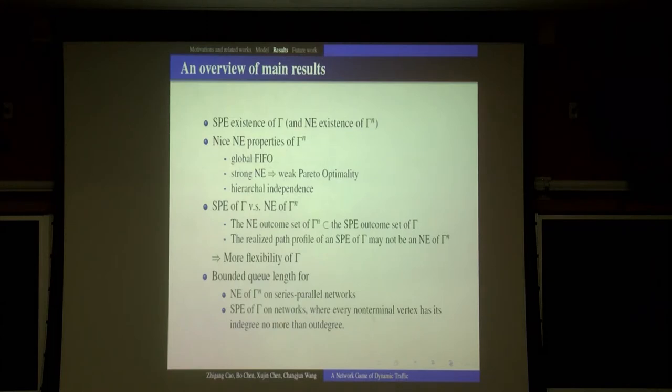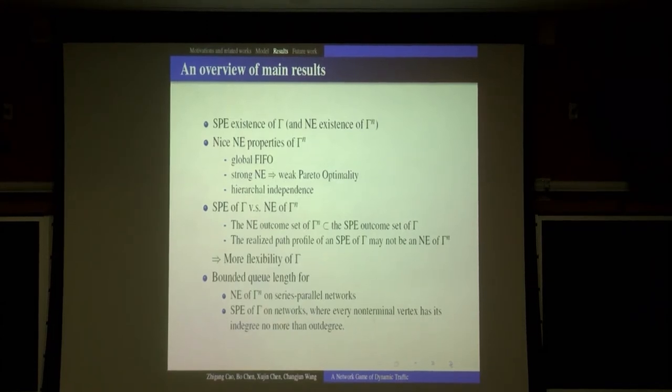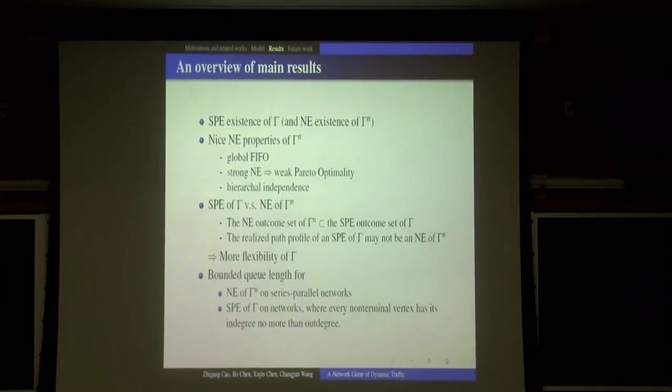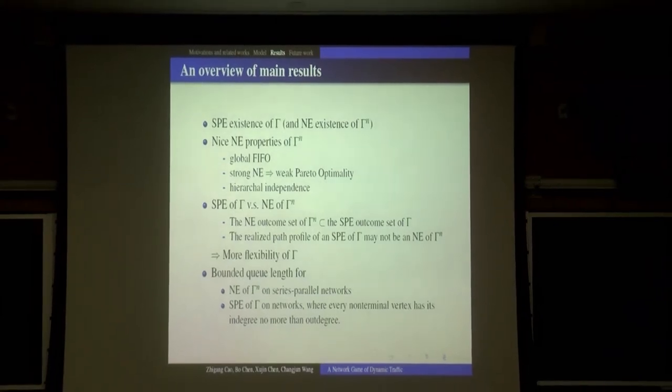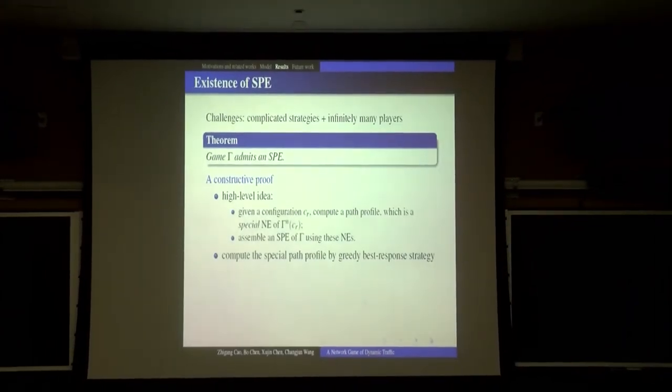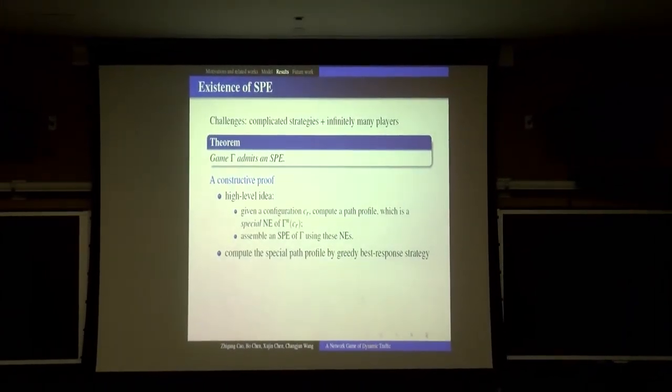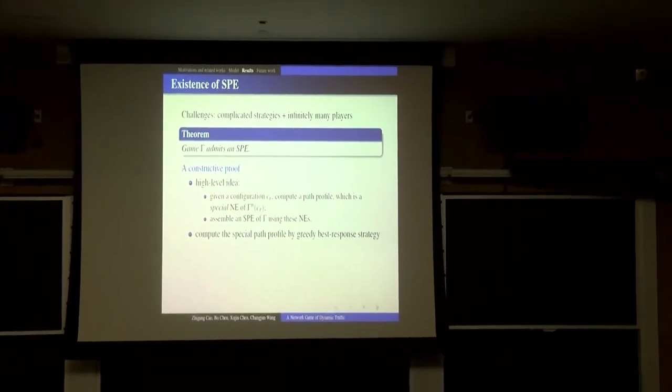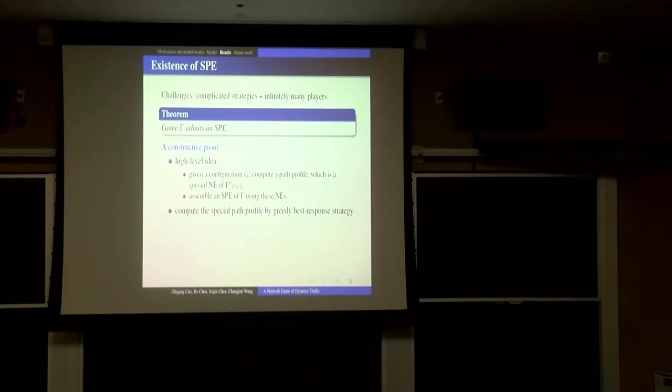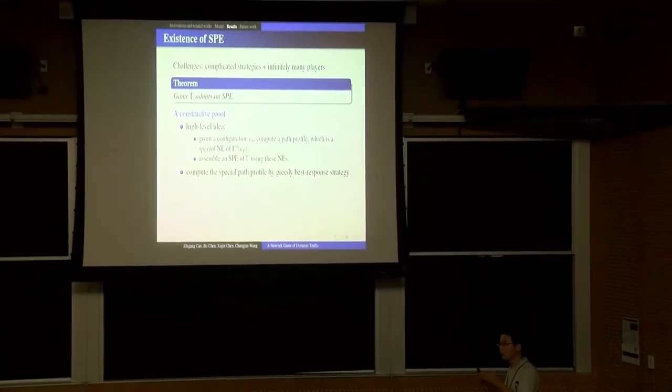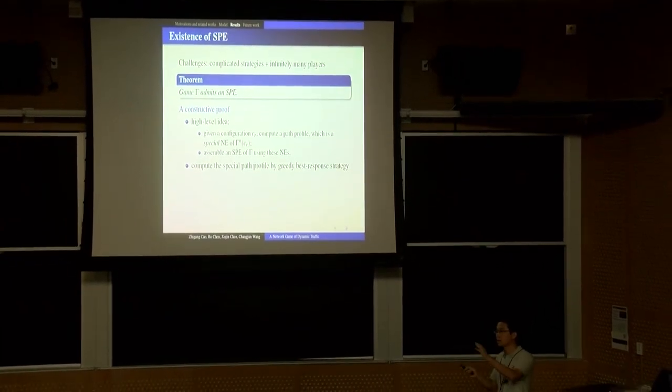Let's have an overview of our main results. First we prove the SPE existence of game Gamma. To the best of our knowledge, this is the first such result, an SPE existence result about this kind of model. The main challenge here is that the strategies can be very complicated, and there may be infinite number of players. They make decisions simultaneously and sequentially. So we cannot use the usual backward induction to prove this.